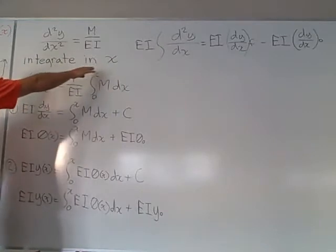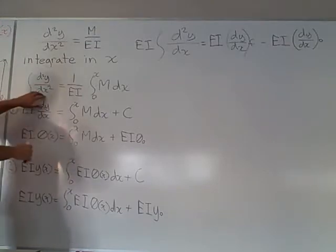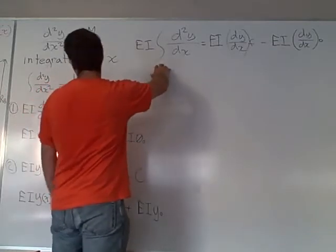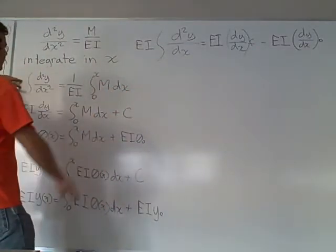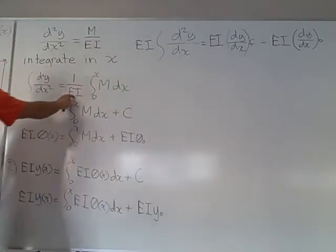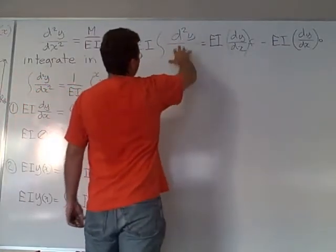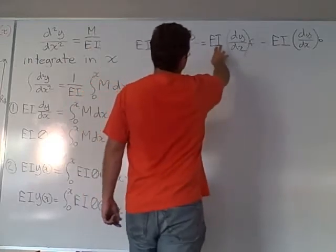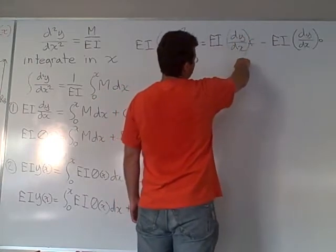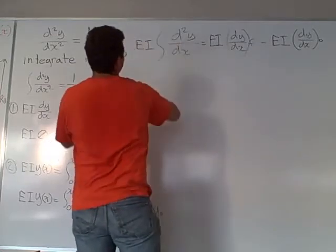So we integrate in x, we integrate the second derivative as I showed it over here. I bring the EI over to simplify the right-hand side. So basically we're integrating the second derivative, and that's going to equal EI times the first derivative at the final position.